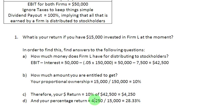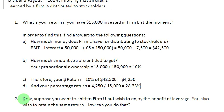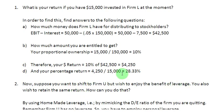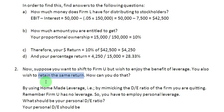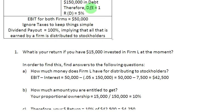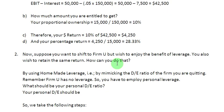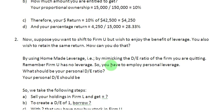Now let us apply the concept of homemade leverage. Suppose you want to move over to Firm U, which is an unlevered firm, but you still want to enjoy the benefit of leverage and you don't want to sacrifice the 28.33% return you were making earlier. We can accomplish that using homemade leverage — by mimicking the debt-to-equity ratio of the firm we are quitting. We are quitting Firm L, in which we enjoyed a debt-to-equity ratio of 1, and moving to Firm U, which has no leverage. So we can employ personal leverage — that personal leverage is the homemade leverage.